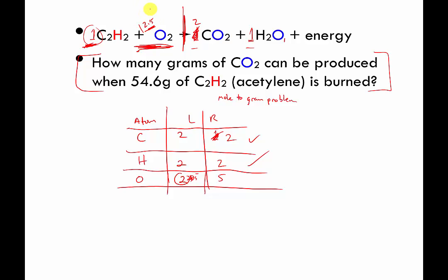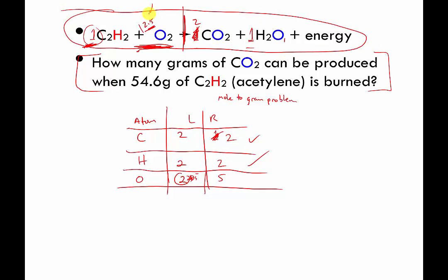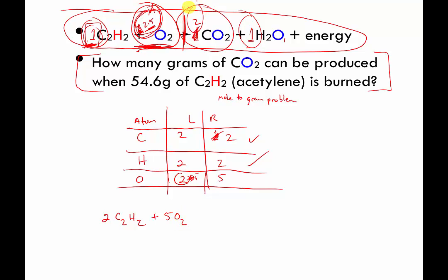Usually, if you can, people will try to adjust equations like this to get rid of the fraction. You can double all of the front numbers and it will stay balanced, and if you double this it will turn into a whole number. So if we double it: we turn this 1 into a 2, so it's 2C2H2. If we double this 2.5, that's 5O2. If we double this 2, that's 4CO2. And if we double this 1, that's 2H2O. Let's just check to see if we still have a balanced equation.